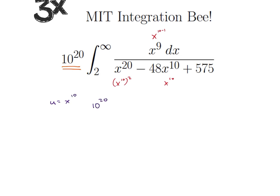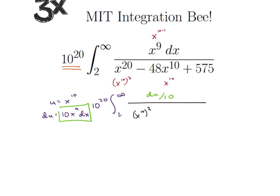So that makes our integral: we're going to get 10 to the 20th, integral from 2 to infinity. Since du equals 10x to the 9th dx, we're going to plug this in, getting du divided by 10 on top. On the bottom, x to the 10th squared becomes u squared, so we get u squared minus 48u plus 575. The last thing we need to do is update the bounds — since we're doing x to the 10th, the lower bound becomes 2 to the 10th.